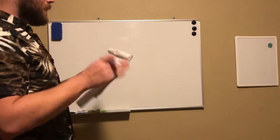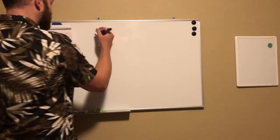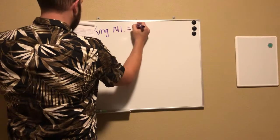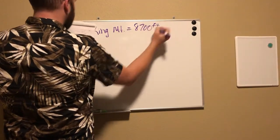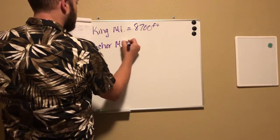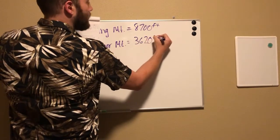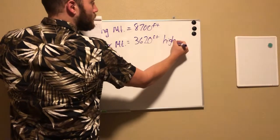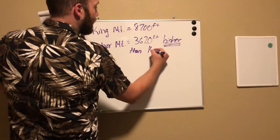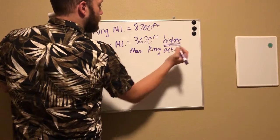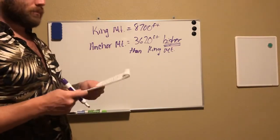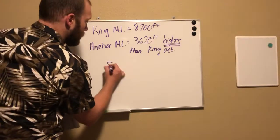So the reason is because the key word in there is 'higher.' Because it says King Mountain equals 8,700 feet. Anchor Mountain equals 3,620 feet higher than King Mountain. Underline that. Meaning if I add these two together, it's going to give me the height of Anchor Mountain. So I want to add those together, so I'll work the problem here.